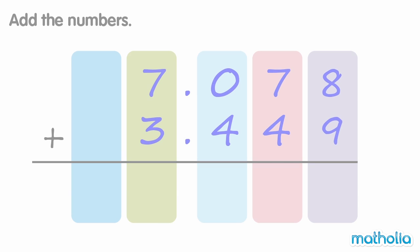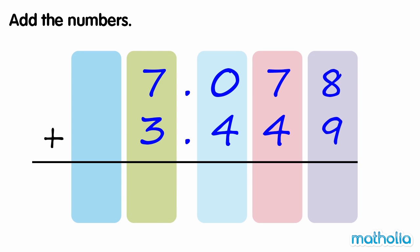Find 7.078 plus 3.449. 8 thousandths plus 9 thousandths equals 17 thousandths. We can regroup 17 thousandths as 7 thousandths and 1 hundredth.